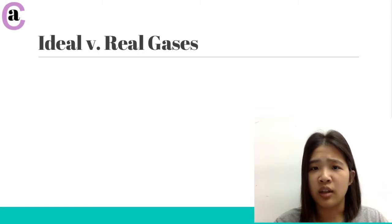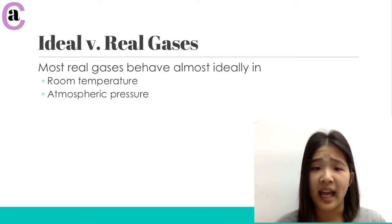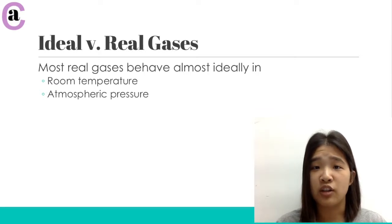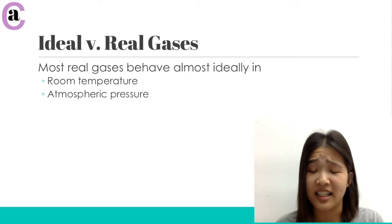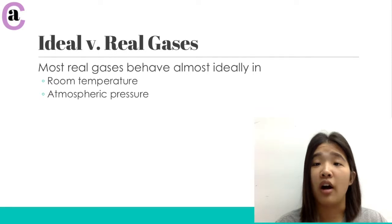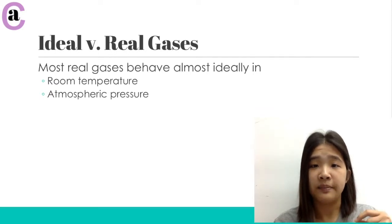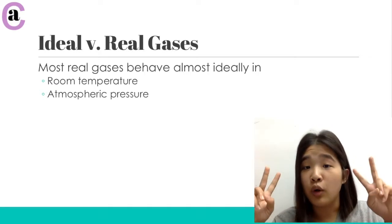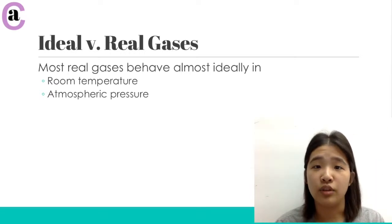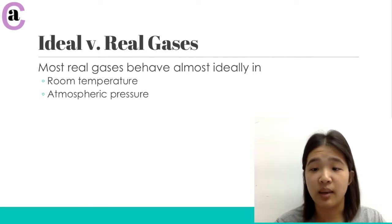Just to elaborate a little bit on the differences between ideal and real gases: most real gases behave almost ideally in certain situations, and those are room temperature and atmospheric pressure. This is really useful because we don't have to actually know exactly what every single real gas is going to do under these situations. We can approximate it with the laws that I'm going to introduce later in this video. Basically, if you have these normal conditions — just out in the open, in the air — you're going to be able to use the ideal gas approximations.